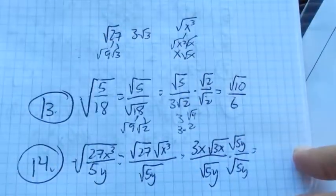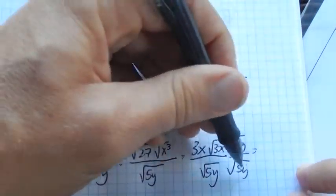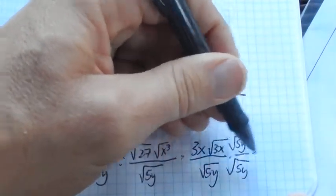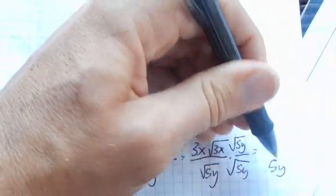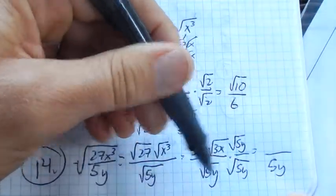Remember, which is just a 1. So in the denominator, root 5y times root 5y is 5y. That's why I chose that to multiply by.